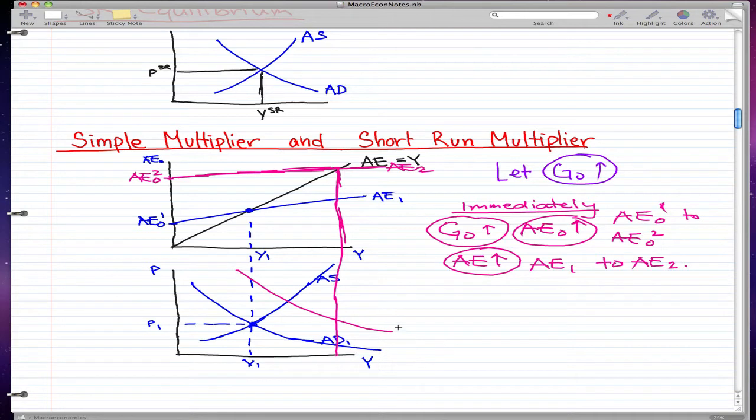Where the price and new aggregate demand curve crosses, we'll draw a point. And this point is, the price for this point is the same as P₁.